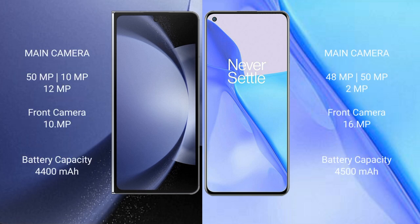Samsung Galaxy Z Fold 6 features a rear triple camera setup: 50MP plus 12MP plus 12MP, and a front camera of 20MP. OnePlus 9 features a rear triple camera setup: 48MP plus 15MP plus 2MP, and a front camera of 16MP.